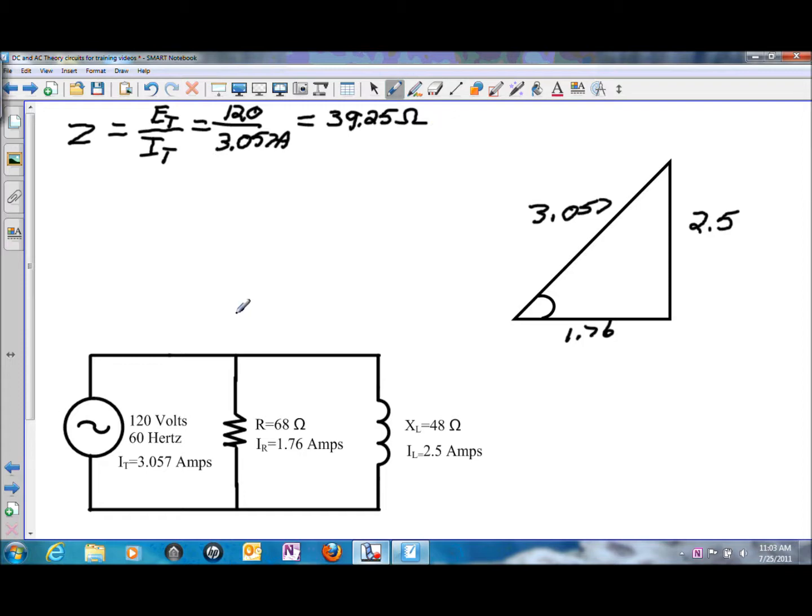If we were to try to build an impedance triangle based upon the numbers that we have, we would have 68 ohms of resistance here, we would have 48 ohms of inductive reactance, and then we would have a Z or impedance of 39.25. We can't build a triangle out of that.